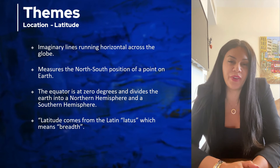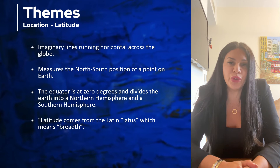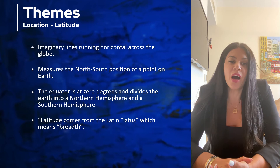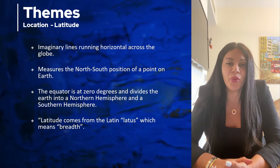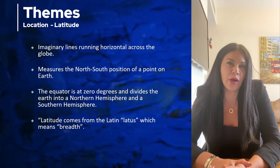Longitude and latitude are imaginary lines running across the globe to tell how far north and south you are, or east and west you are on the globe. The first set of lines are latitude. The word latitude comes from the Latin word lattice, which means breadth. Latitudes are imaginary lines running horizontally across the globe. The most important line of latitude is the equator.